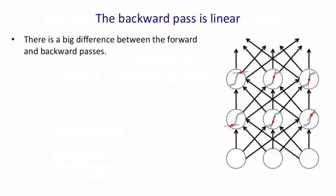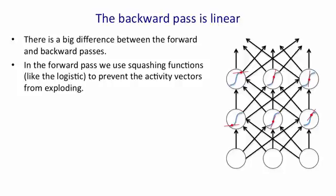To understand why it's so difficult to train recurrent neural networks, we have to understand a very important difference between the forward and backward passes in a recurrent neural net. In the forward pass, we use squashing functions like the logistic to prevent the activity vectors from exploding.